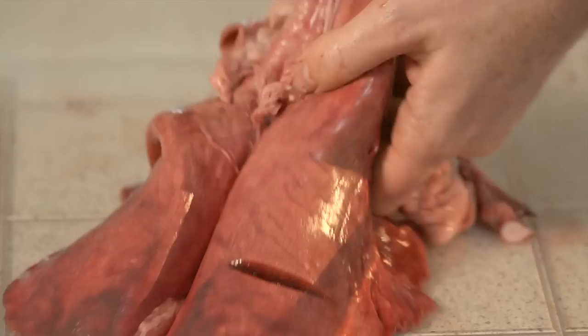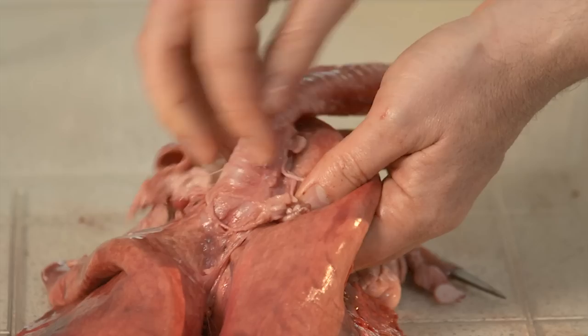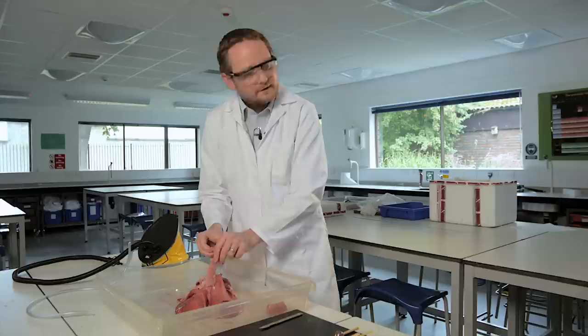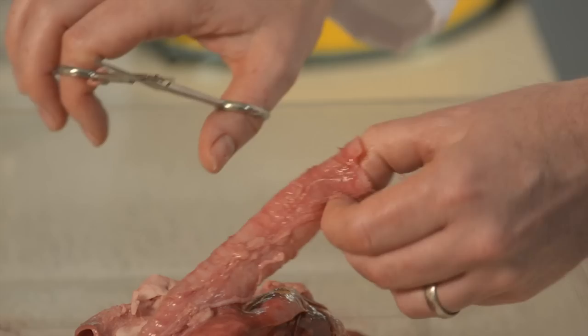We can start seeing the trachea is quite long and goes down in between the lungs down to a point here where it's about to bifurcate. So I think we'll cut down the rings of cartilage and see what we can see inside the trachea.